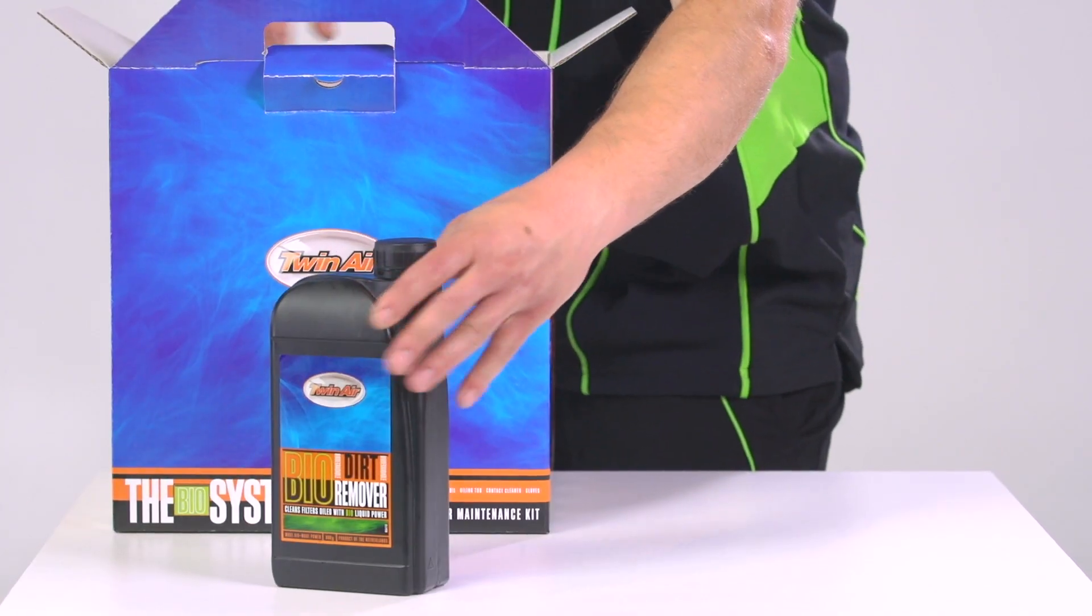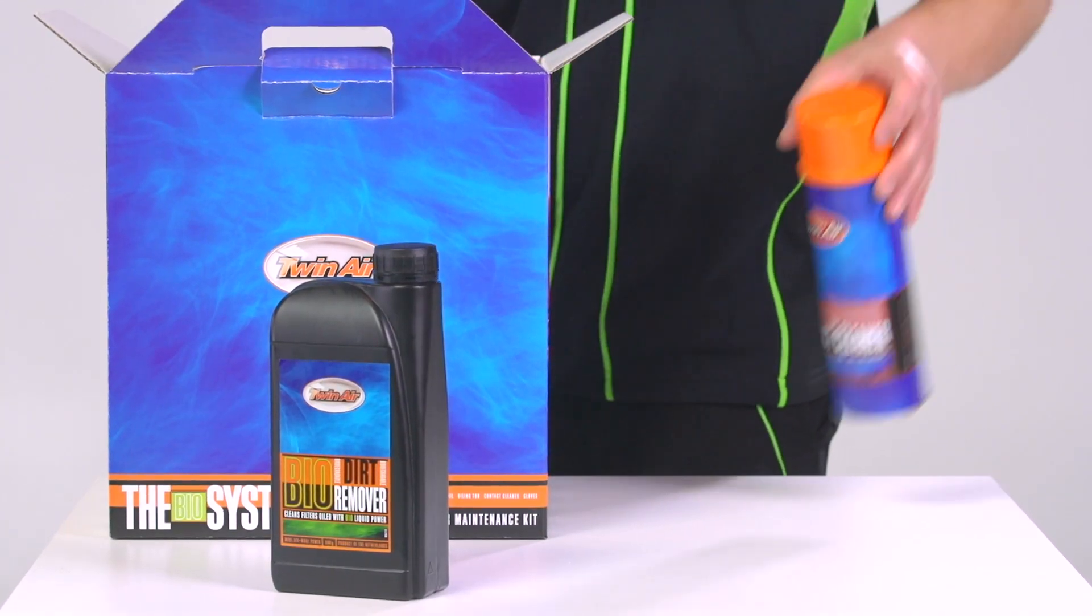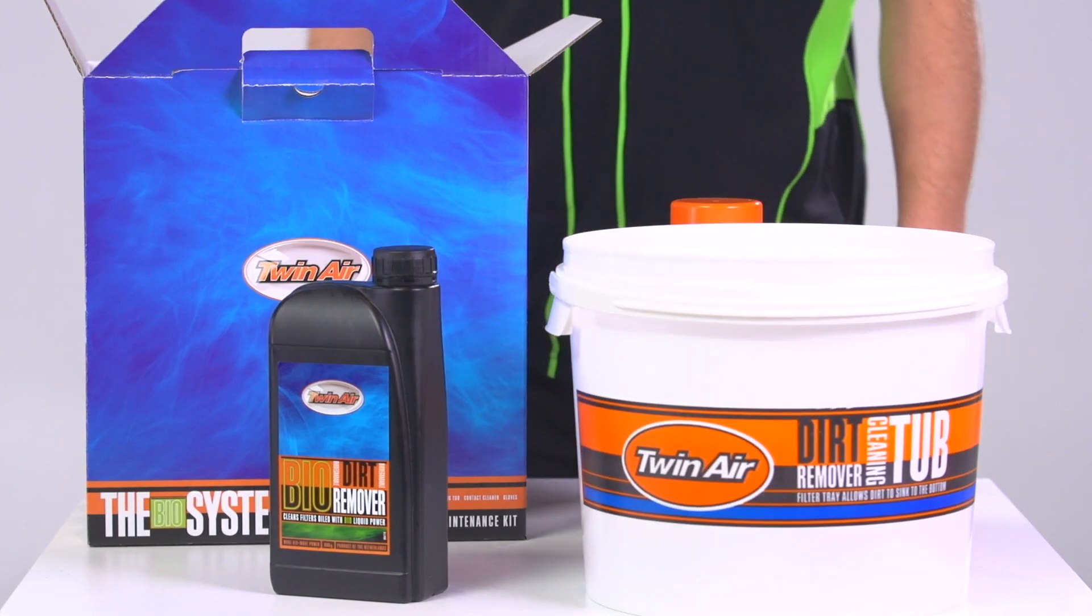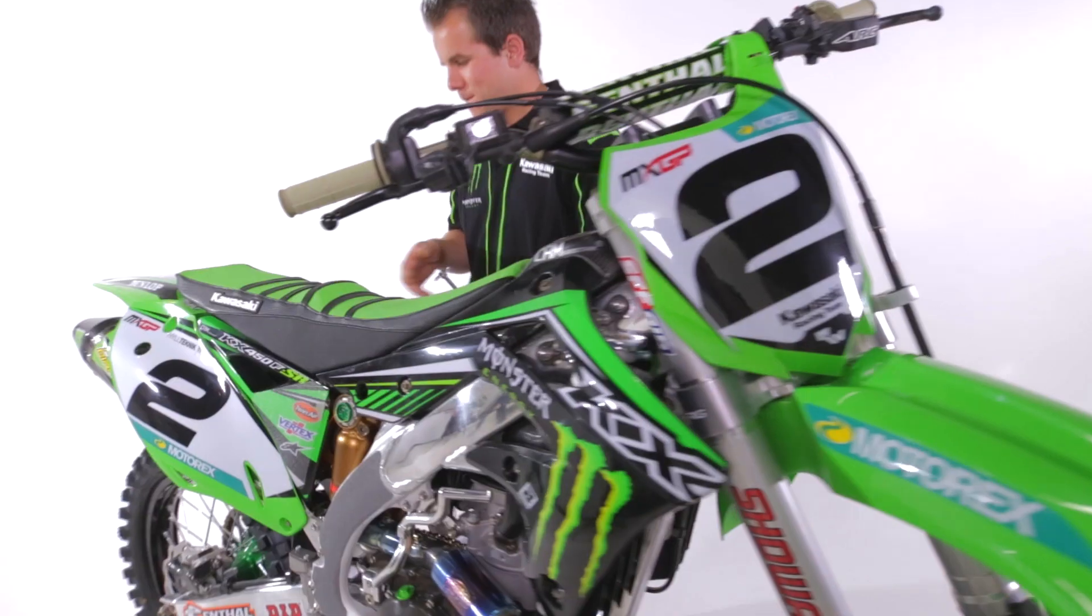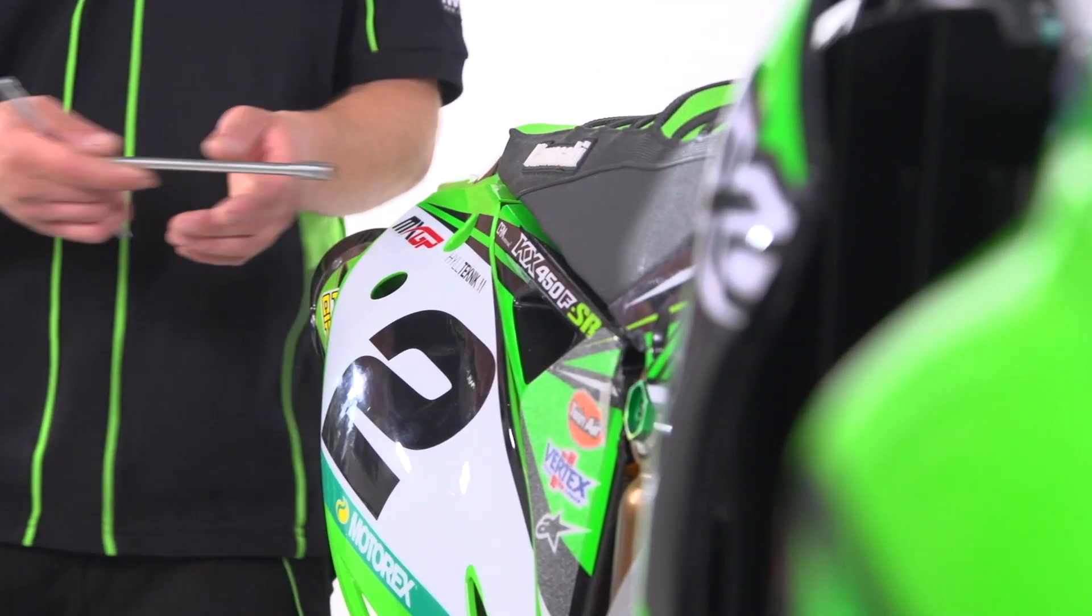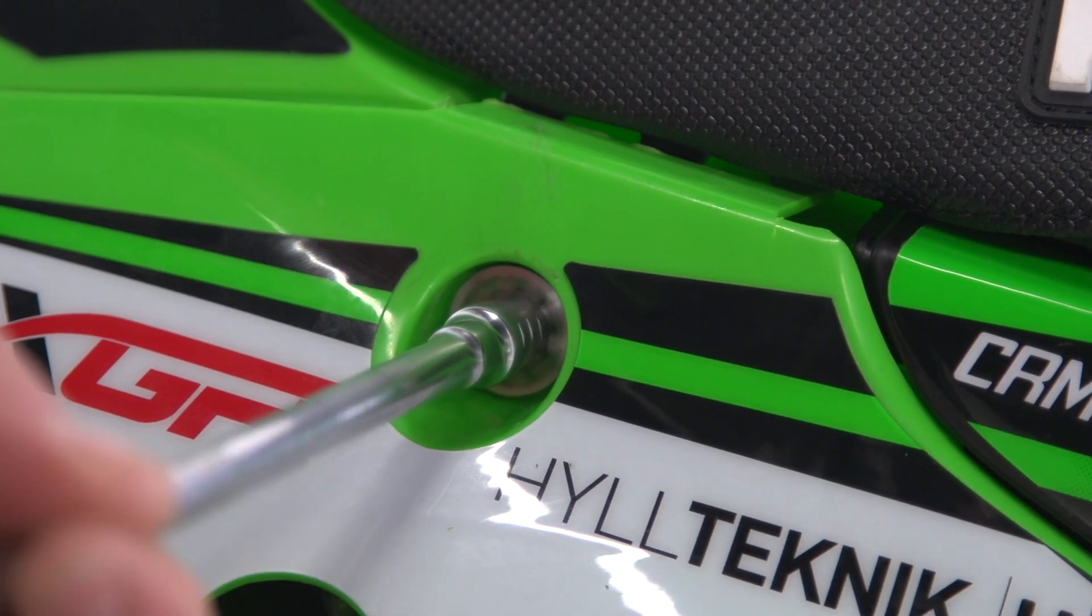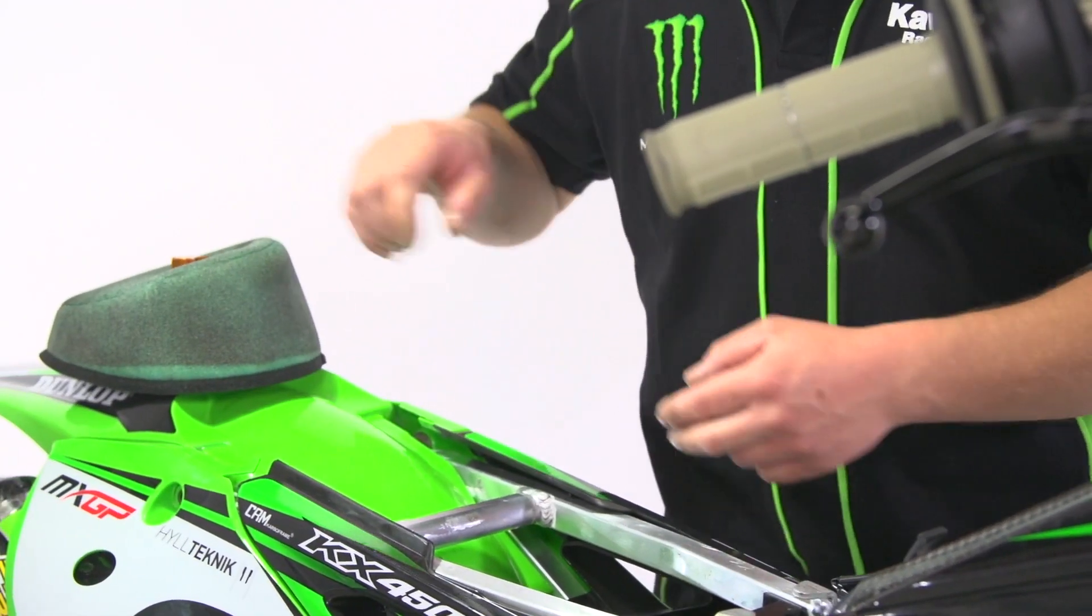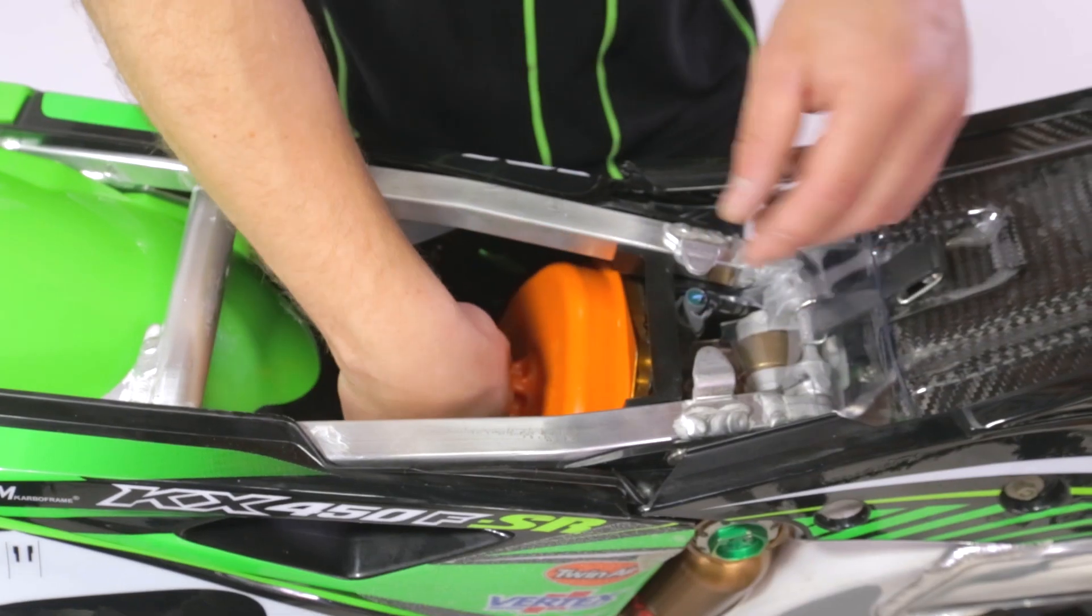Twin Air biodegradable air filter oil is cleanable with Twin Air biodegradable dirt remover. The Twin Air filters are designed for multiple cleanings. Take out your dirty air filter from the airbox and install your airbox cover and exhaust plug before cleaning your bike.